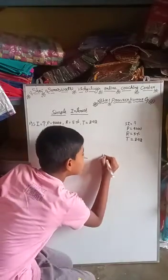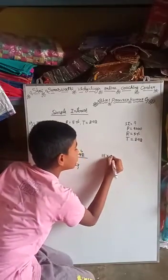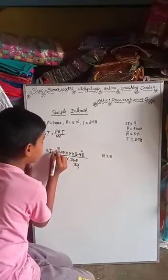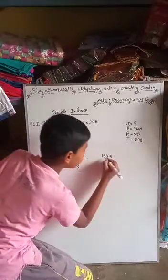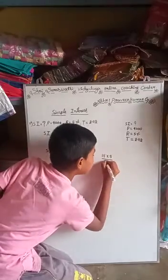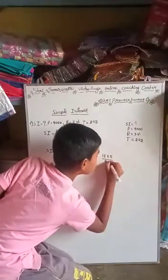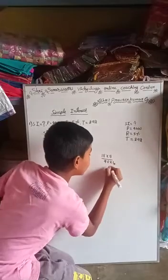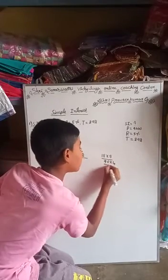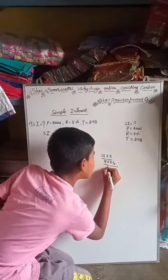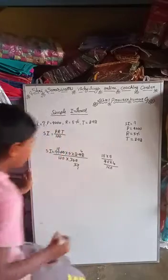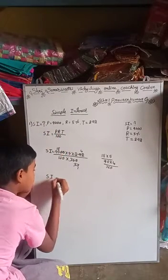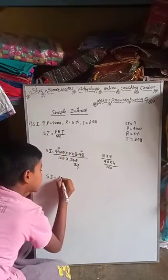Now, 18 into 5. 8 into 5 — 5 is remaining. We are going to do 18 into 5, so it goes to 90. Now 90 into 4 — 9 into 4, 4 is remaining. 9 into 4 gives 36. So SI equals 360.